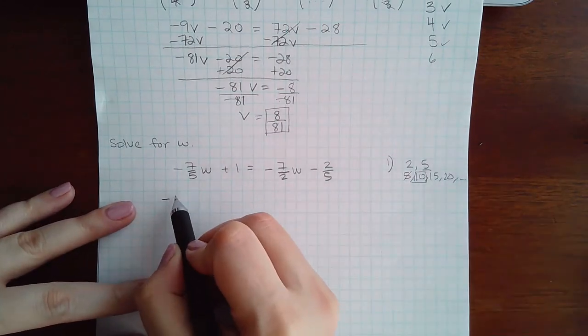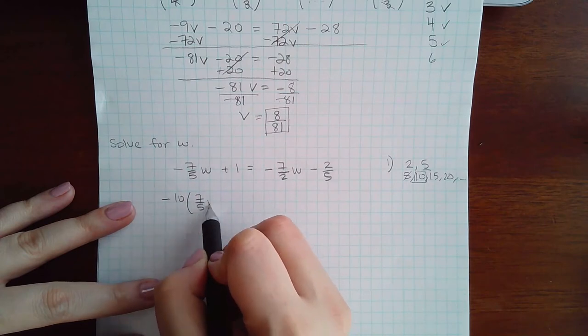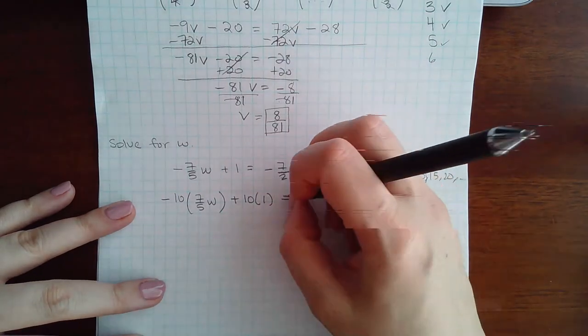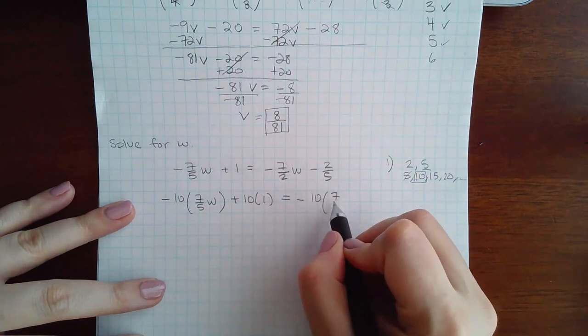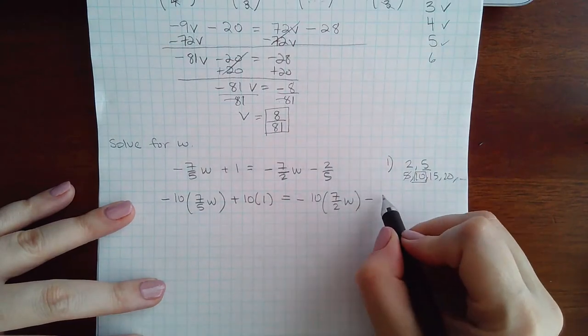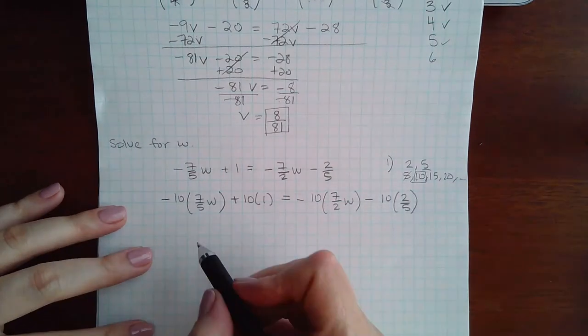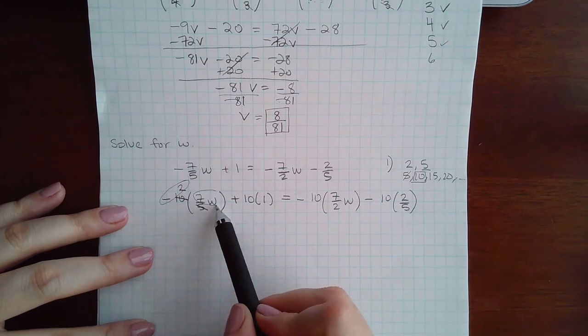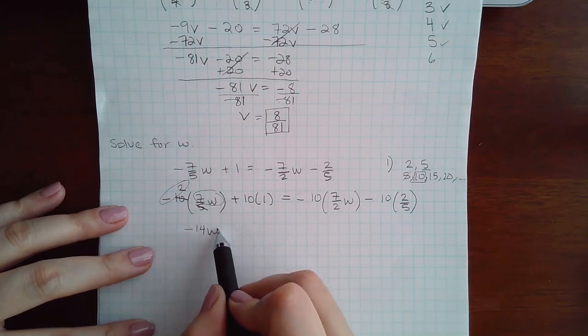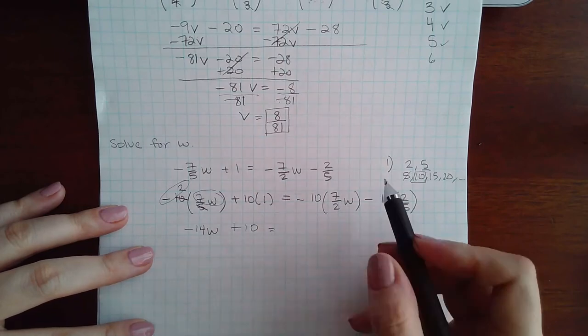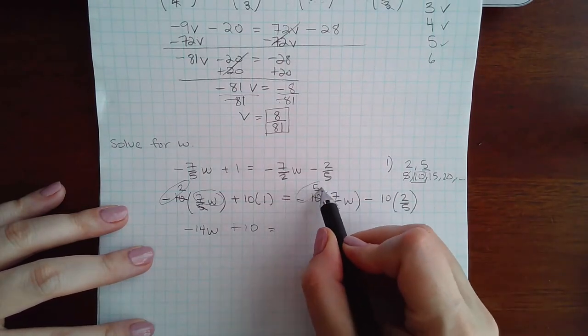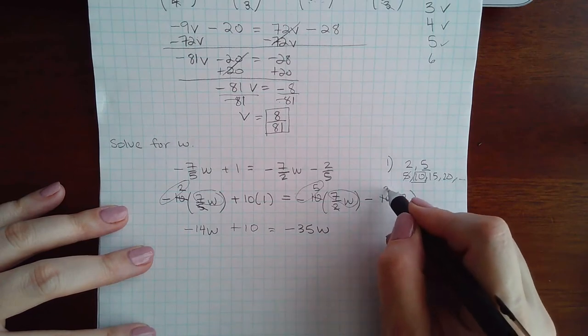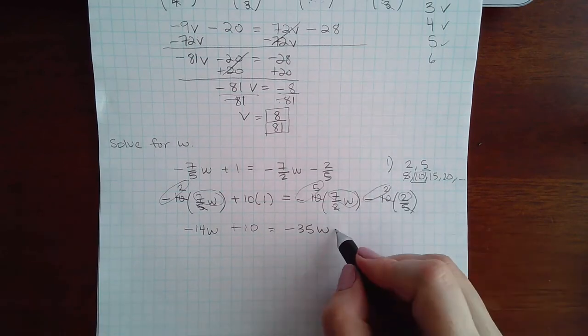So we have 2 does not go into 5 but 2 does go into 10, so this is my lowest common denominator. So I have negative 10 times 7/5 w plus 10 times 1 equal to minus 10 times 2/5 w. Now 5 does go into 10 twice, and you can just remember that this is a negative 2 times a 7w and get negative 14w. Here 10 times 1 is 10. Here 2 goes into 10 five times but you have negative 5 times 7w which is negative 35w. Here 5 goes into 10 twice but you have negative 2 times 2 which is negative 4.